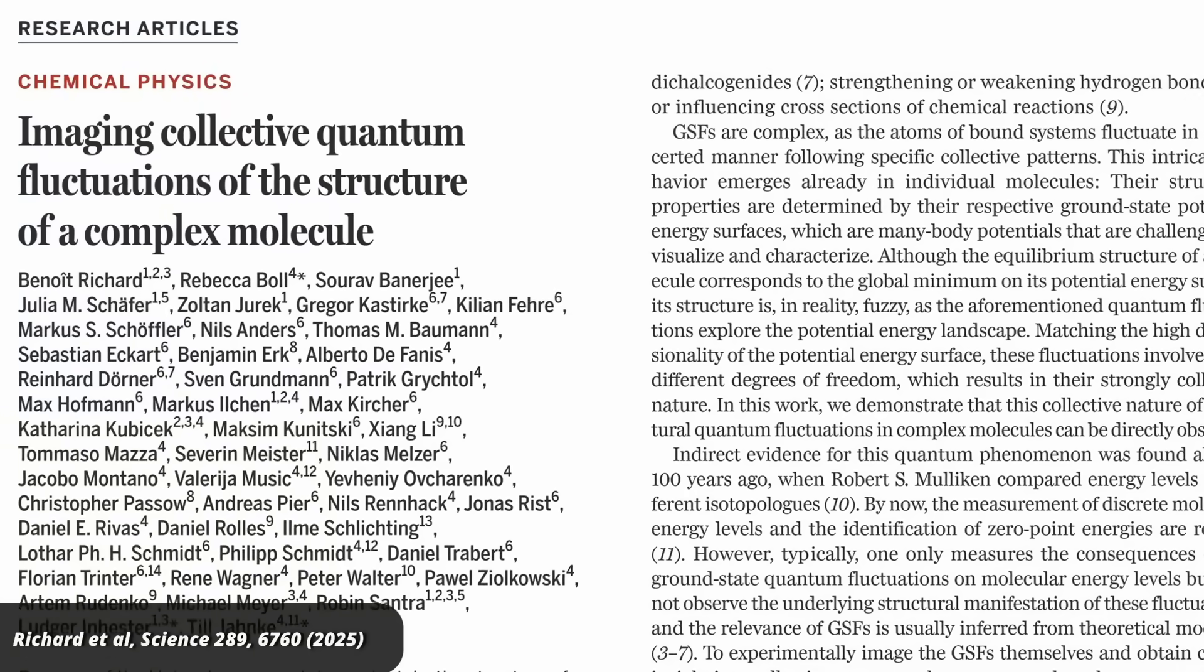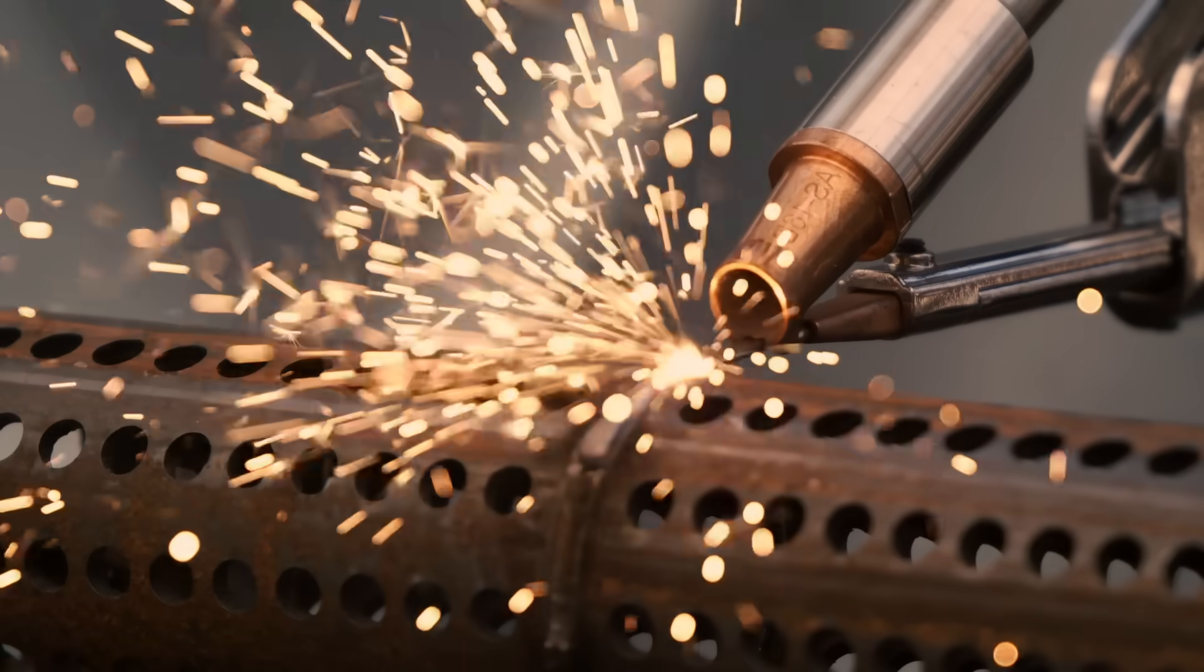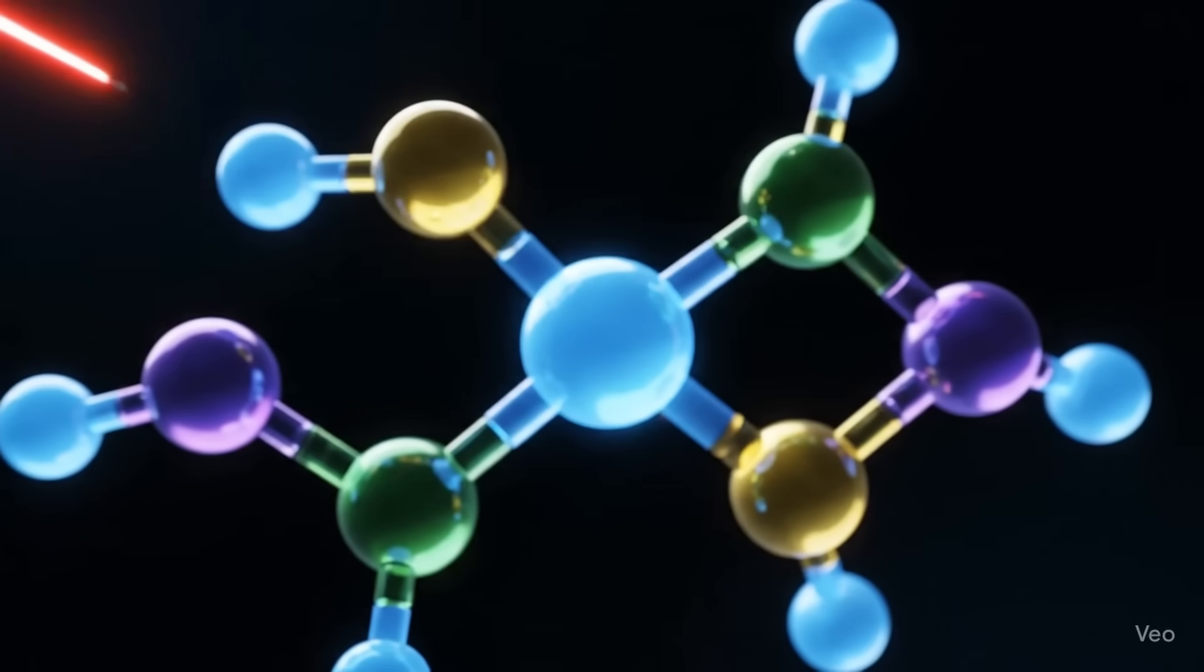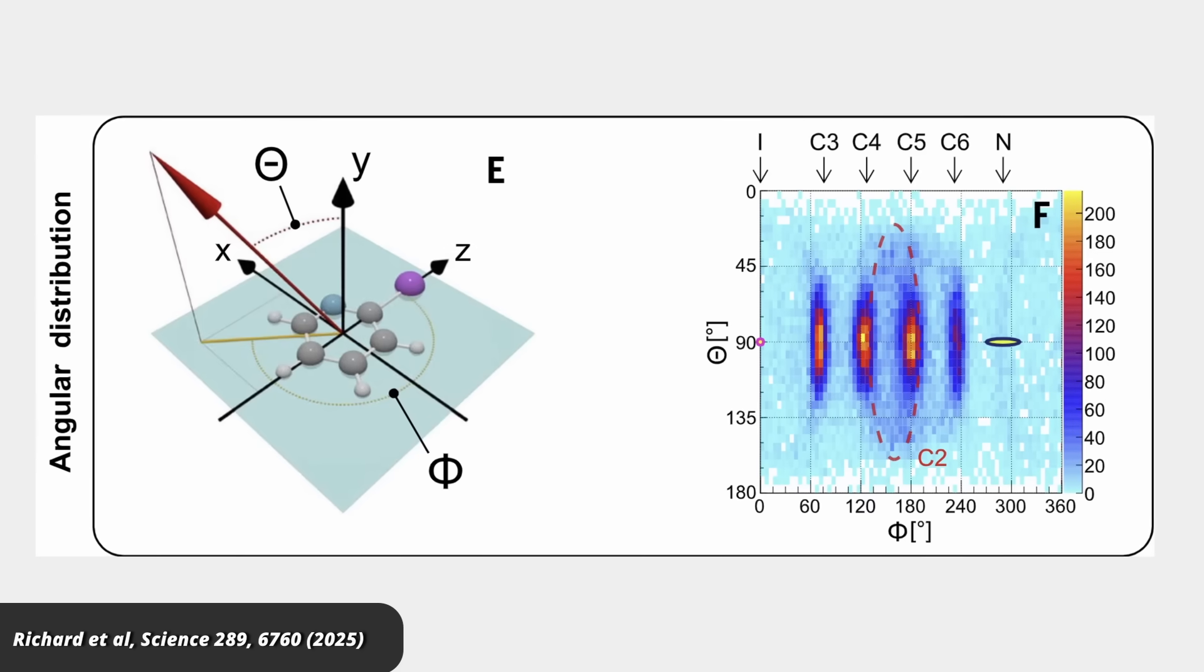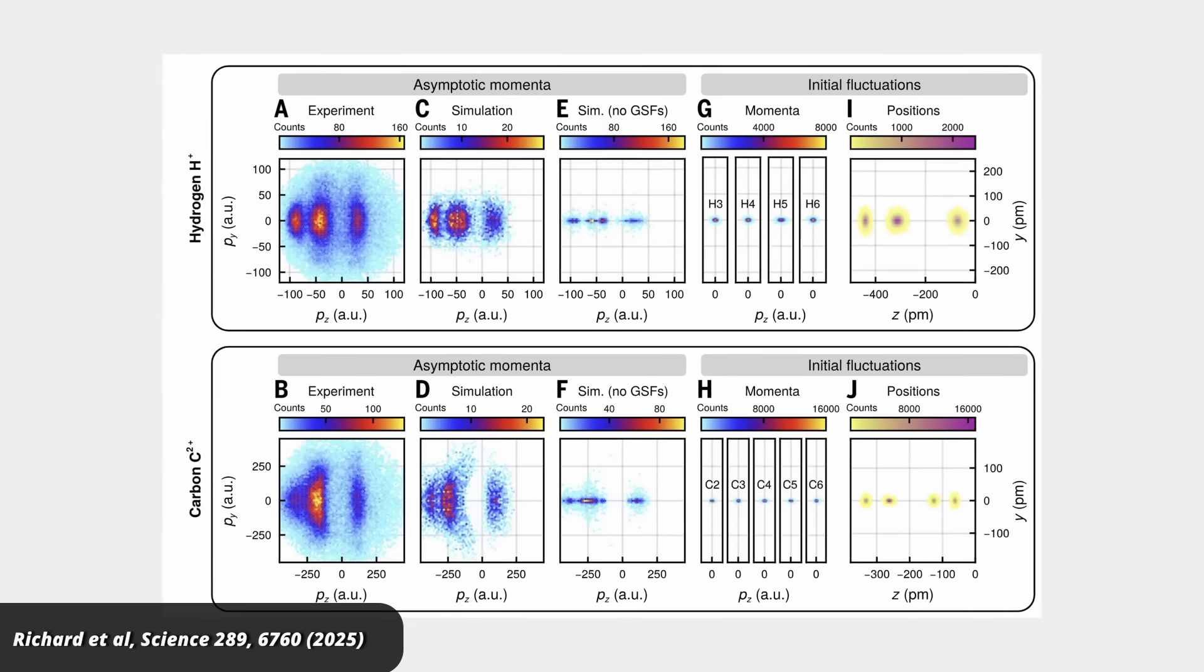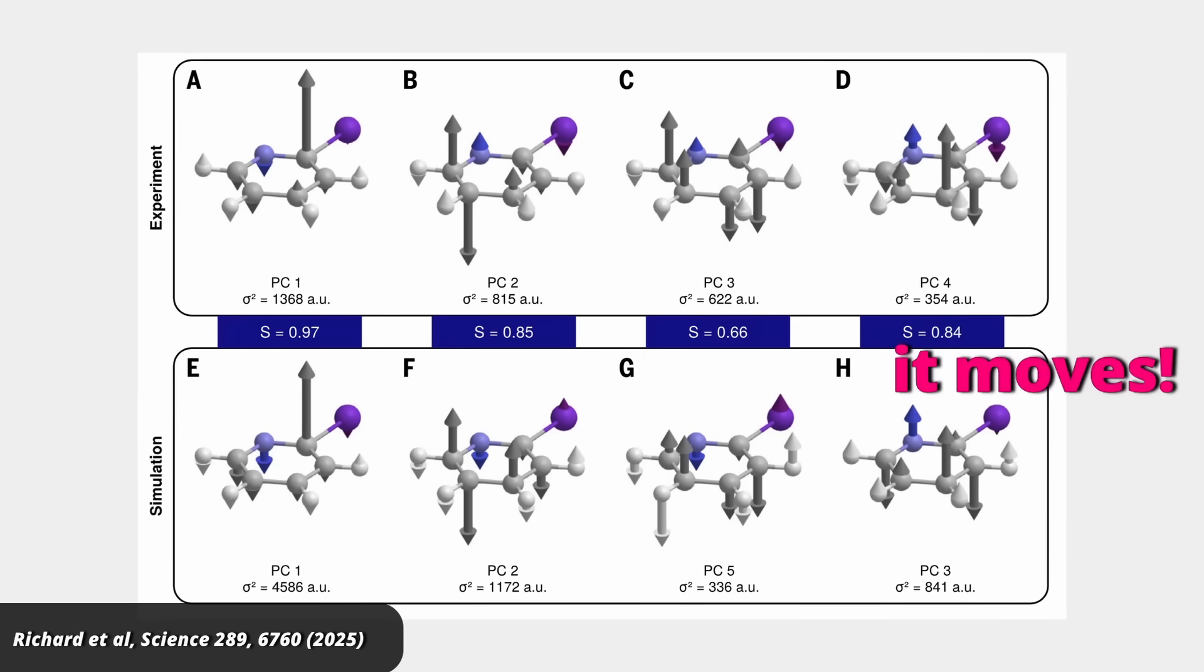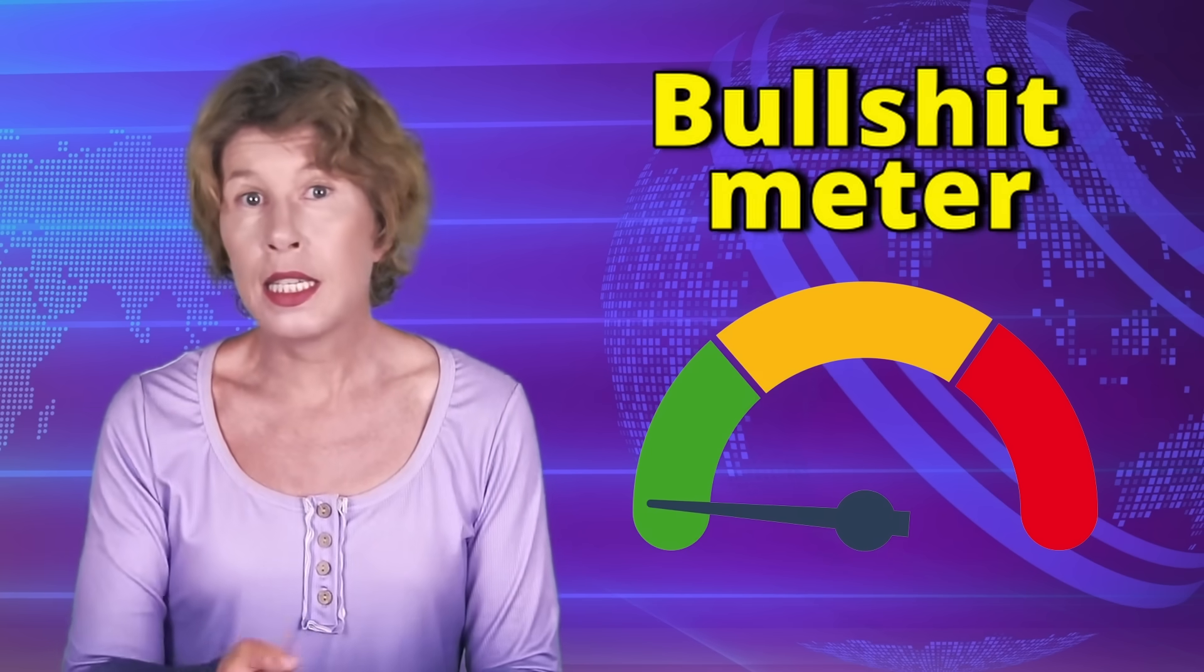They measure this with a method called Coulomb explosion imaging. They basically take a big molecule and they blast it with a huge x-ray laser. This rapidly strips off the electrons. Without the electrons, the atomic nuclei strongly repel each other because they're all positively charged. So the molecule explodes. They catch all the atoms and then they measure exactly what momentum each nucleus had. From this, they can infer how much zero-point motion the atoms had before the blast. It's a really clever method. And to make a long story short, they find that zero-point motion is totally real. I give this paper a zero out of ten on the bullshit meter. It's a neat experiment.